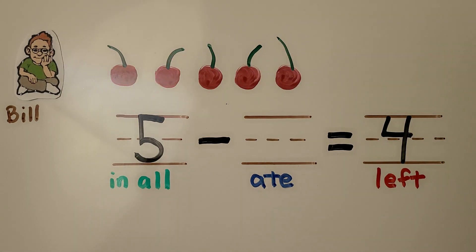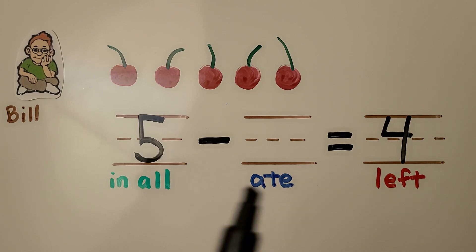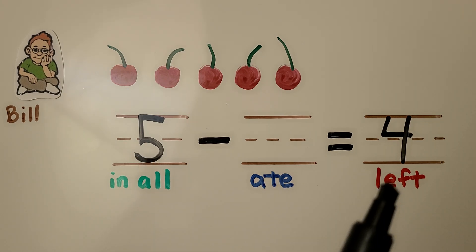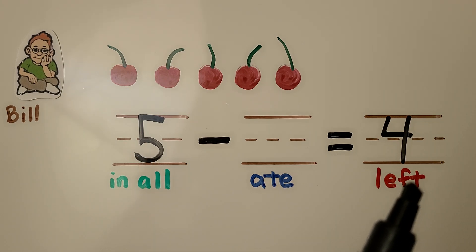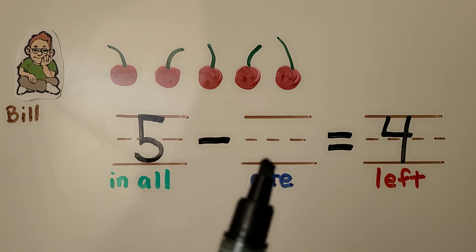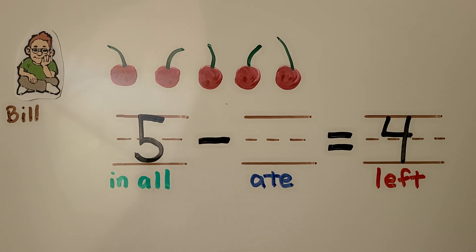We're missing the number of how many he ate. There are five in the set in all. He has four left after he ate some. We need to find how many he ate.